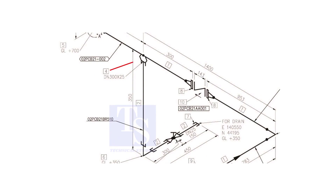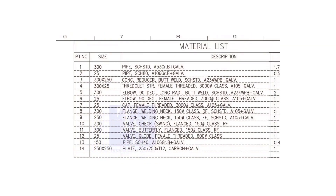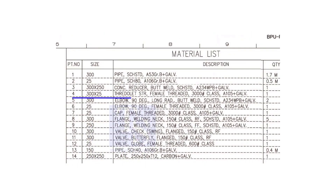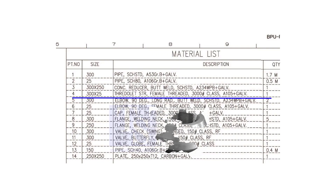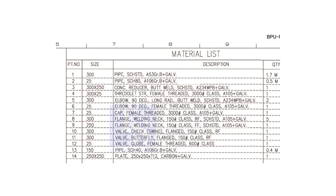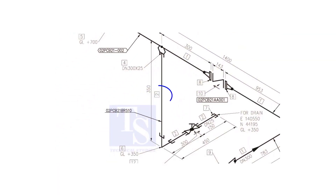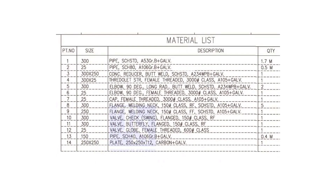Item number 4 is a straight female 3,000-pound threadolet. The size is 300 into 25. Item number 2 is a schedule 80 pipe. The size is 25 NB.